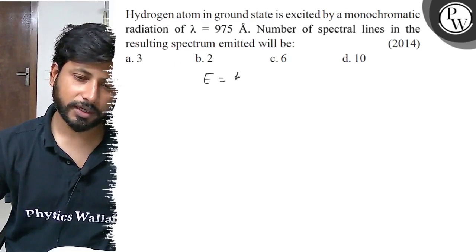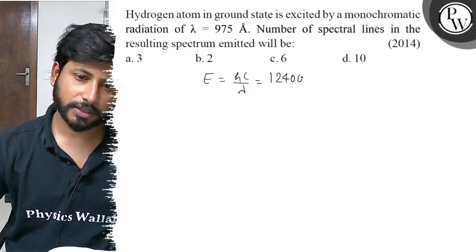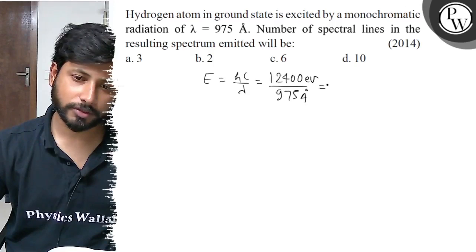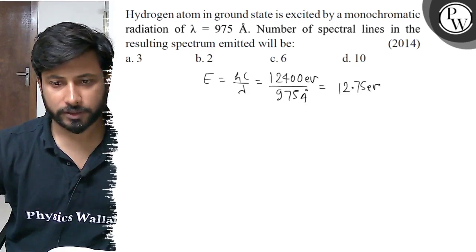Energy equals hc by lambda, 12,400 electron volts divided by 975 angstroms. So if we solve the problem, we have 12.75 electron volts.